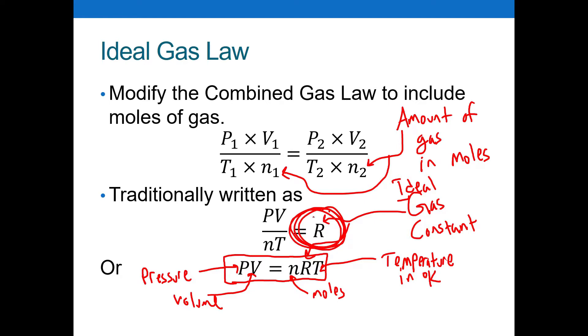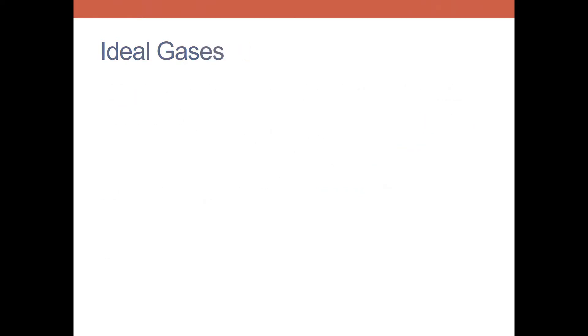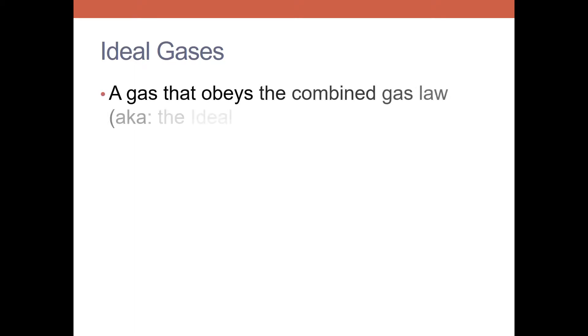What is the ideal gas constant? First, what is an ideal gas? An ideal gas is basically a gas that obeys the ideal gas equation — the equation I just talked about on the previous slide. That's what an ideal gas is: it obeys that equation.